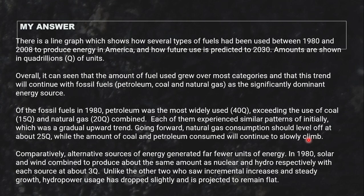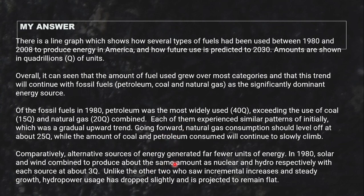Here's what I wrote on the same topic. 'Several types of fuel had been used' — I'm showing off my grammar there — 'and how future use is predicted.' I just say Q for quadrillions. My overview: 'Overall, it can be seen that the amount of fuel used grew over most categories, and that this trend will continue with fossil fuels as the significantly dominant energy source.' Then I break it up into fossil fuels and alternative sources of energy — which is also a way to use your lexical range.